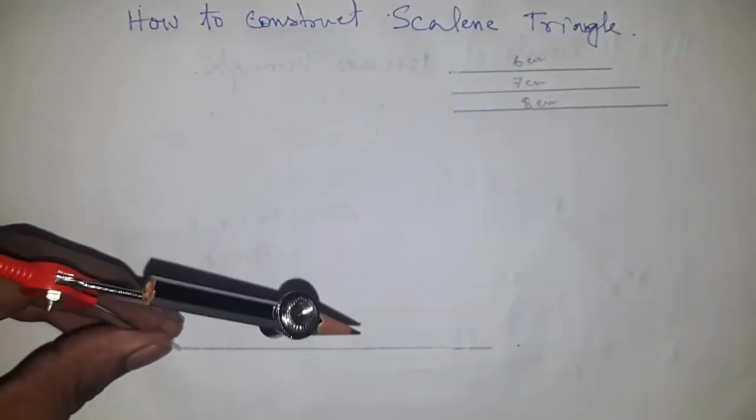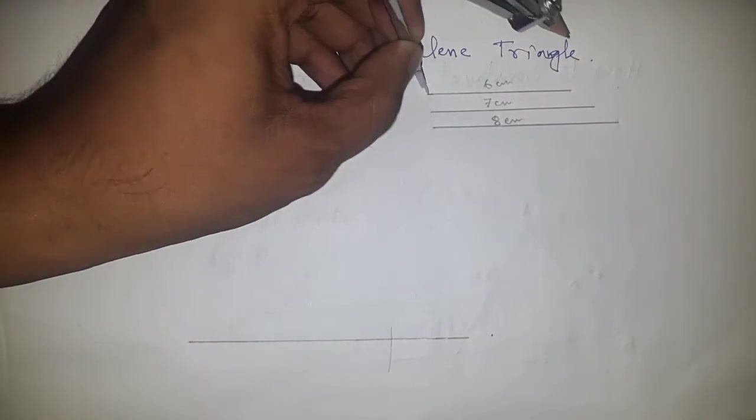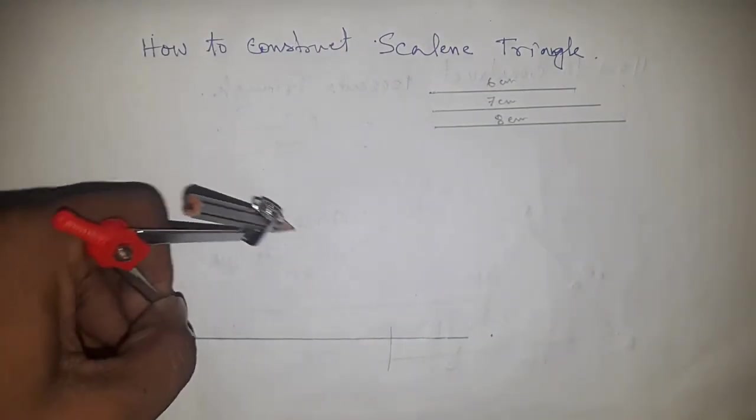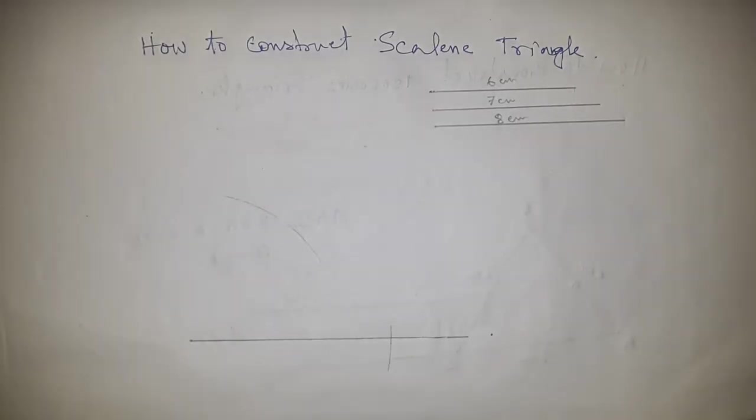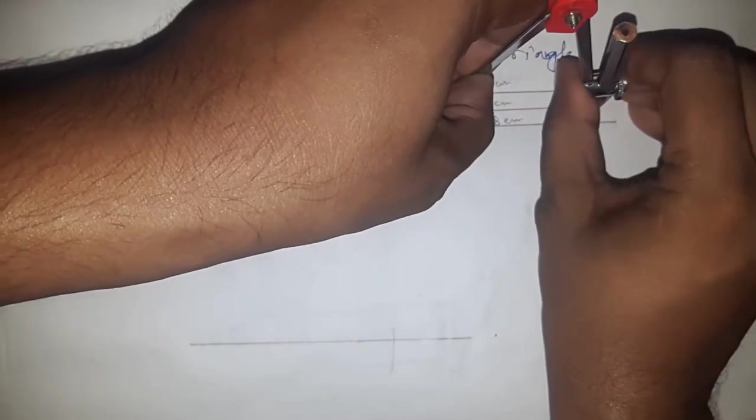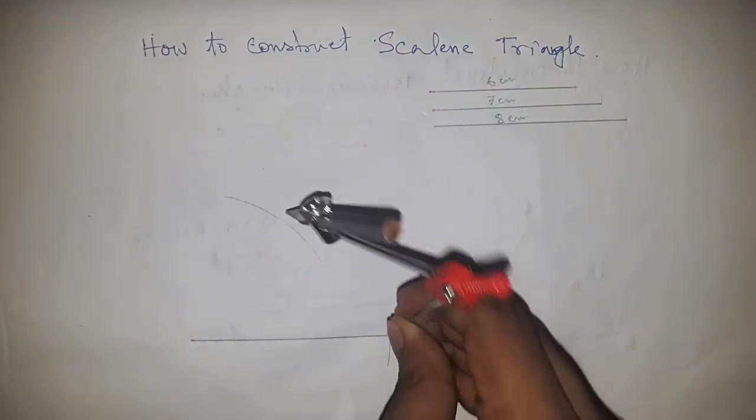Putting the compass here and cut the line. Again, taking the measurement of the side and putting the compass here and draw an arc here. Again, taking the measurement of the side and putting the compass here and draw an arc.